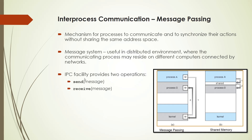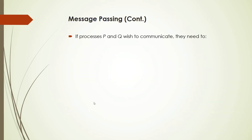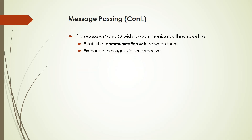Interprocess communication provides two operations: send message and receive message. These are the two functions used by processes to send and receive messages. The size of a message can be either fixed or variable. If two processes P and Q want to communicate, they need to establish a communication link between them for exchanging messages.